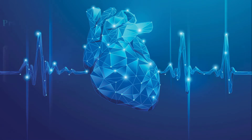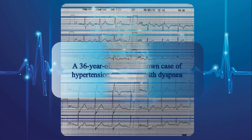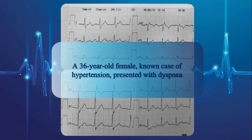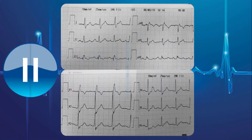Let's go through three real examples. The present strip belongs to a 36-year-old female, known case of hypertension, presented with dyspnea. What do you think about this strip? Does it require any immediate intervention? Before going through the EKG strip, pause the video and try it yourself, then play the video again and compare your findings with the correct answer.